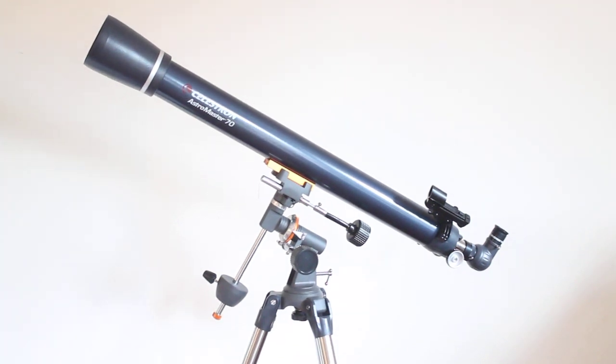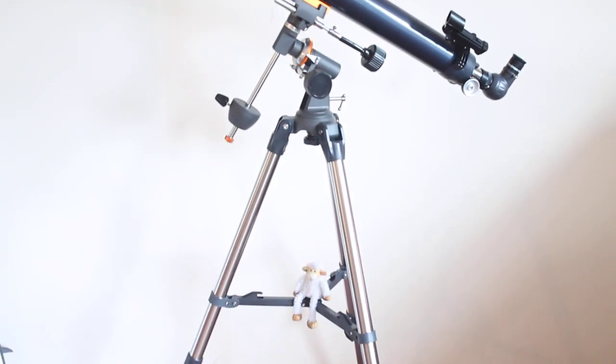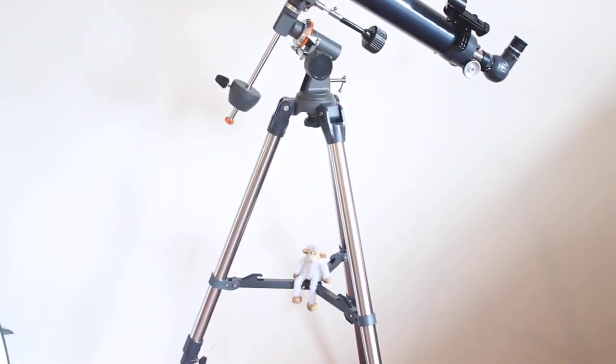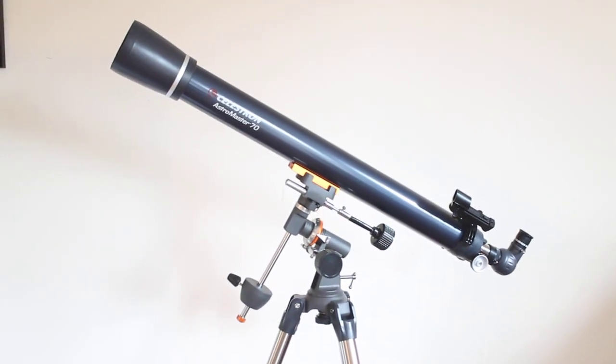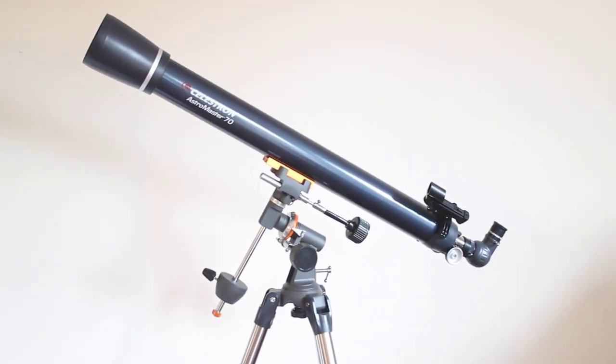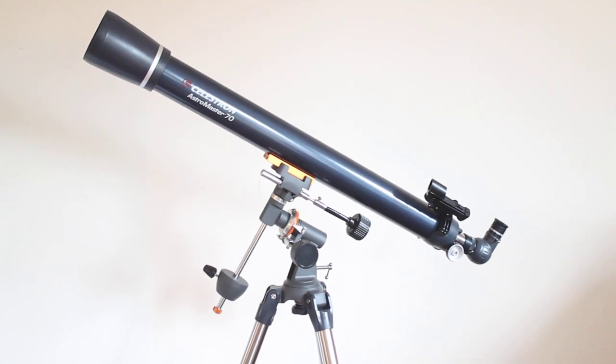This one comes with a very nice German EQ mount, and unlike the lower end Power Seeker range, it comes with steel tube legs rather than the thinner aluminum ones that you get with the Power Seekers.